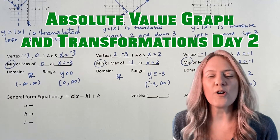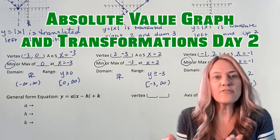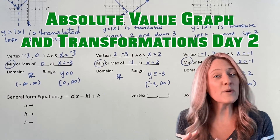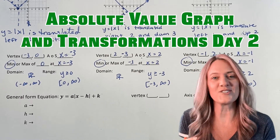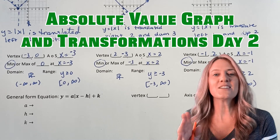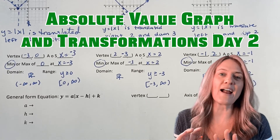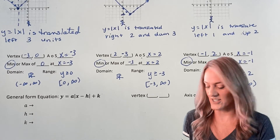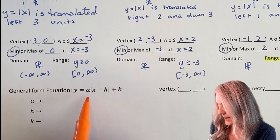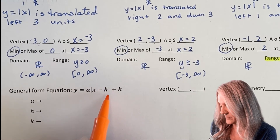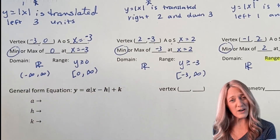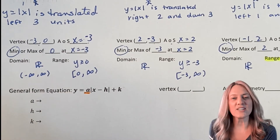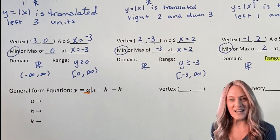Think of how much you've learned so far — you already know translations left, right, up, down. These rules we're talking about are going to apply to all of our parent functions this year. So next, let's look at the general form equation for our absolute value parent function with transformations: y equals a times absolute value of x minus h, plus k. What does each of those variables stand for? A is our dilation, and we haven't looked at that yet, but we're about to.